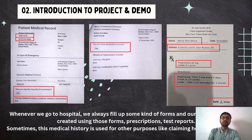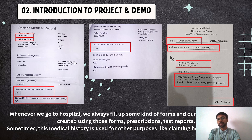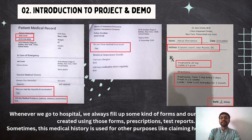Now let me introduce you to the project. Whenever we go to a hospital, we always end up filling some kind of forms, and our medical history is created through these forms, prescriptions, and test reports. This medical history is not only used by doctors, but can also be used for other purposes like claiming health insurance. In our project, we have two types of documents: patient medical record and prescription.